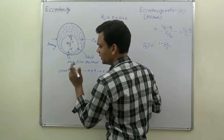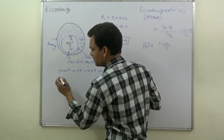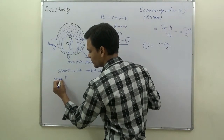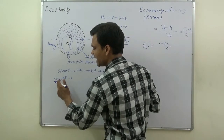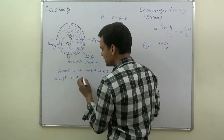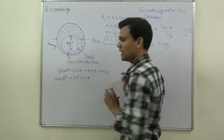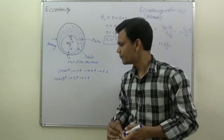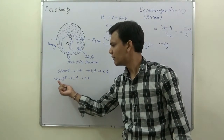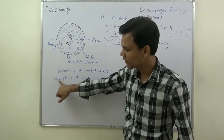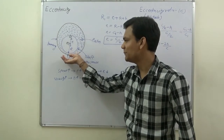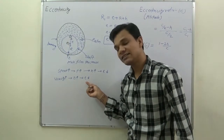Another term is viscosity. If the viscosity of the lubricant is more, then minimum film thickness will also be more. Due to this reason, eccentricity will be less. Also, as the load on the shaft increases, then minimum film thickness will decrease, and eccentricity will increase.